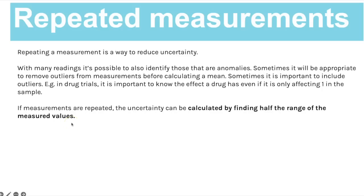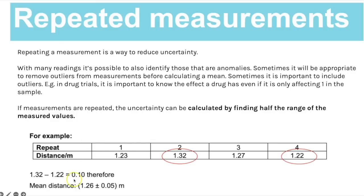If you have repeated measurements and can't remove anomalies, the uncertainty can be calculated by finding half the range of the measured values. The AQA workbook example shows three repeats, and you find the range between the smallest and largest values. For example, if the range is 0.10, half of that is 0.05. So the mean distance would be stated as 1.26 ± 0.05 - that is the uncertainty on repeated measurements.